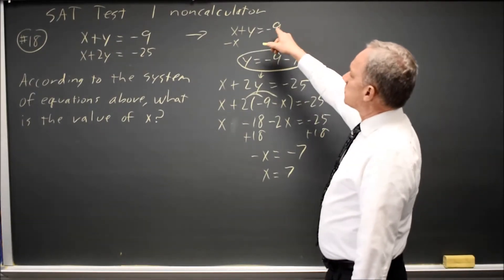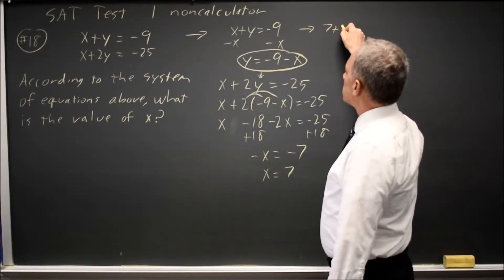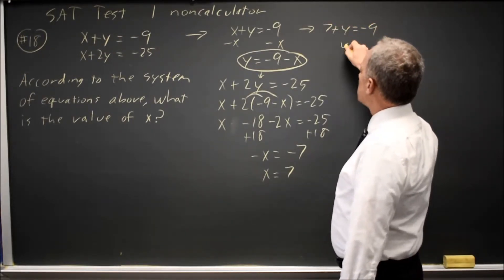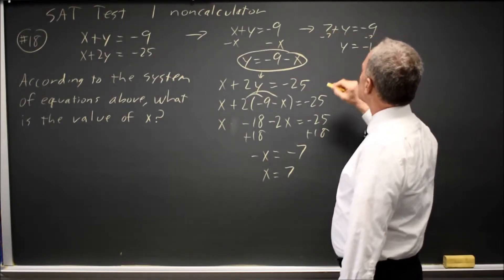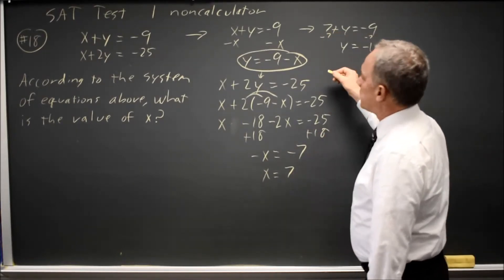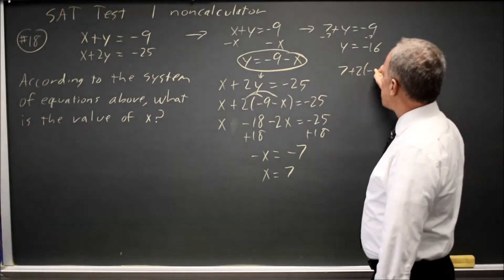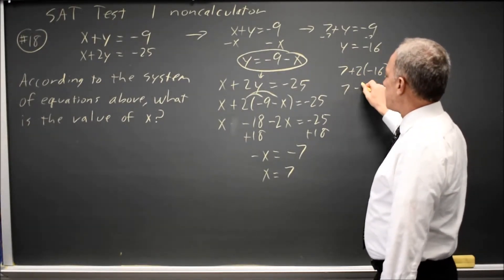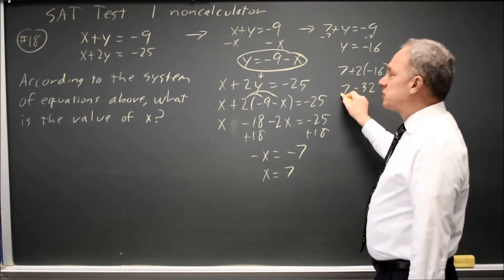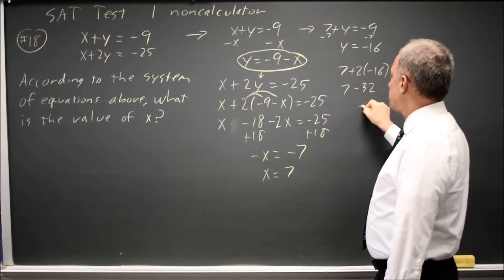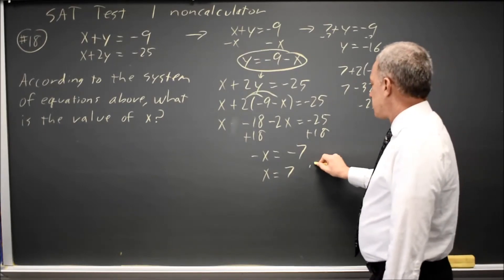Let's check to see if that works in both equations. 7 plus y equals negative 9, so y equals negative 16 if I subtract 7 from both sides. Trying that in the second equation, x equals 7 plus twice negative 16, which is 7 minus 32. Since 7 minus 32 equals negative 25, and that is equal to negative 25, this solution is correct.